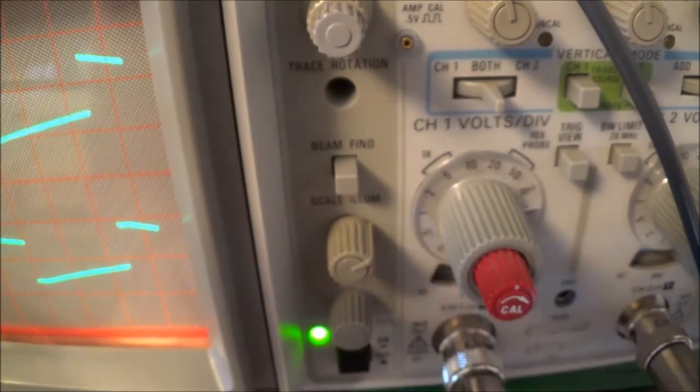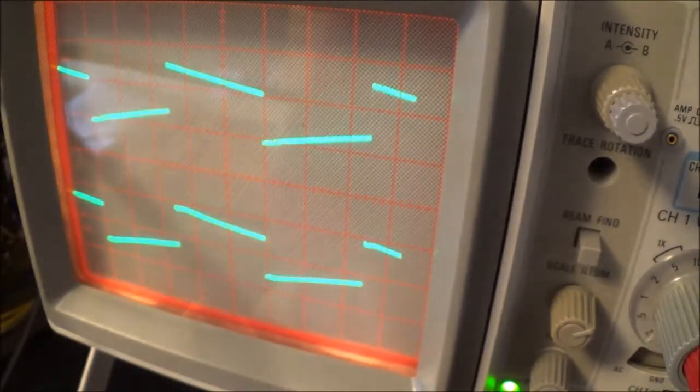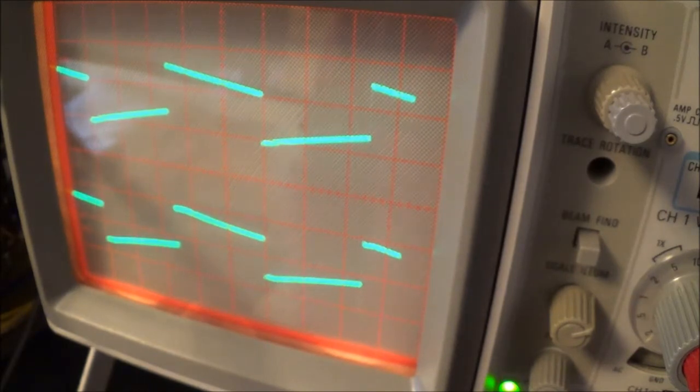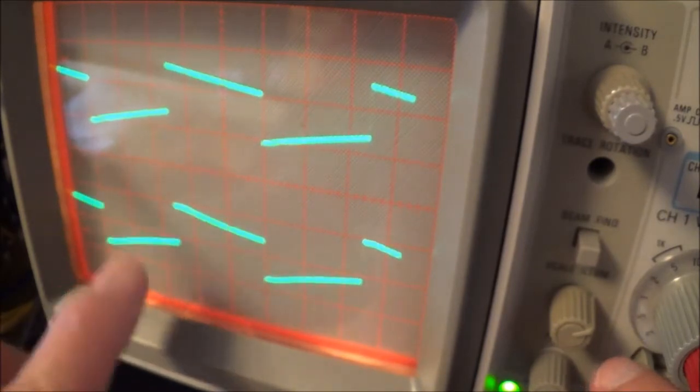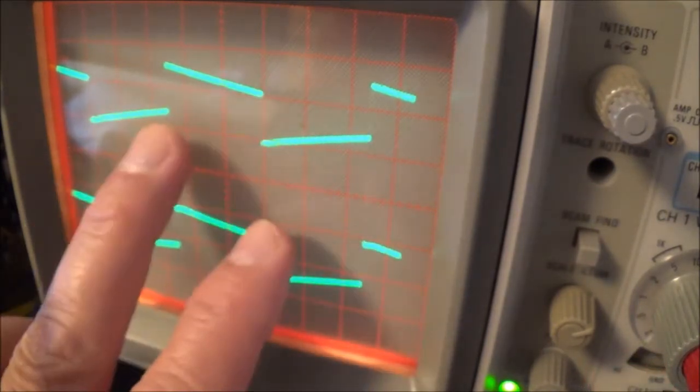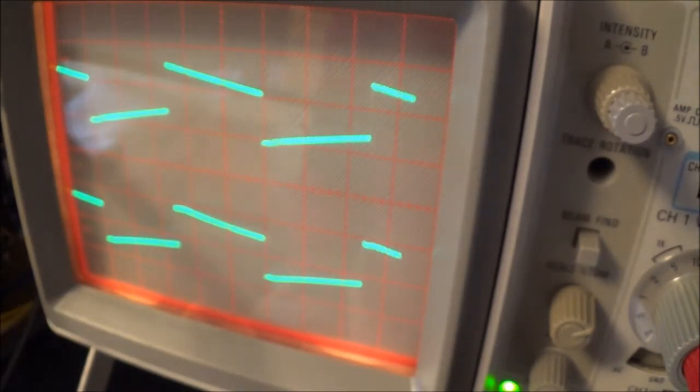For the first test I've got my scope in the DC position. If we look here, if I put it in the AC position you notice this is somewhat steeper than this, because the scope when it's in the AC position has a capacitor in the front end and that's going to make this square wave not square. That's what I'm doing for the first test.